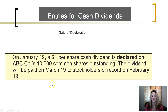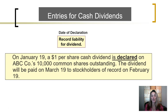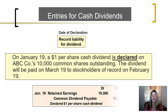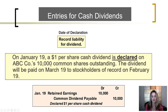On January 19th, the date of declaration, we need to record a liability for that dividend. As soon as the Board of Directors declares, the corporation has a liability to pay. Because dividends are paid out of the company's accumulated profits, and accumulated profits are recorded in retained earnings, we need to decrease retained earnings by the amount of the dividend. The amount of the dividend is $10,000, which is $1 per share times 10,000 shares outstanding. The liability will be credited to common dividend payable for the amount of $10,000.